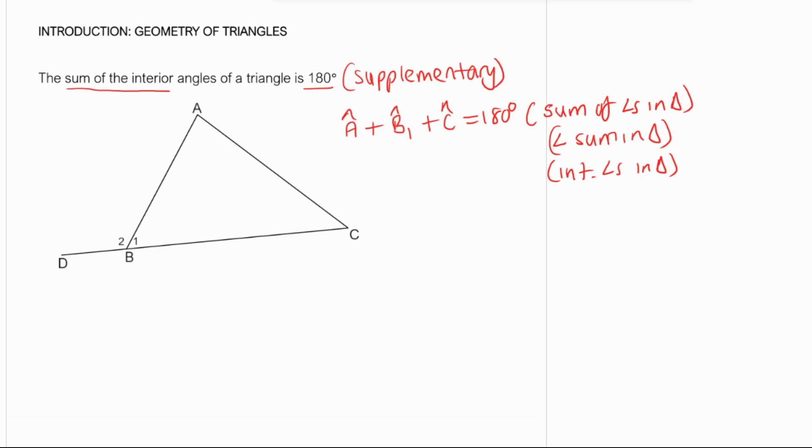We can prove this by using adjacent angles on a straight line and also using the geometry of parallel lines. We construct a line that is parallel to AC. Let's construct a line that is parallel to AC. And then we call it BE. BE is parallel to AC.